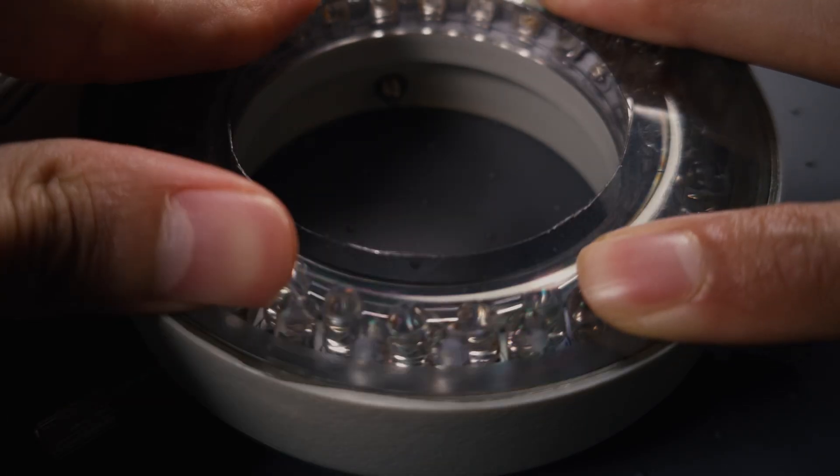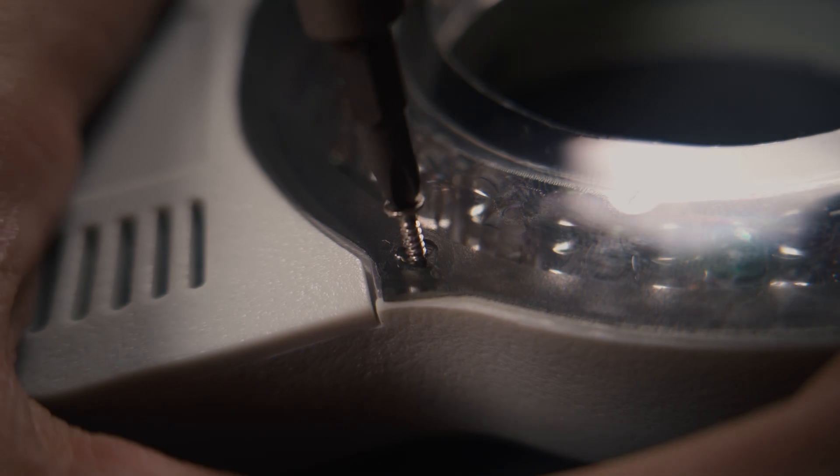Let's reassemble the lamp. We'll need to poke through the polarizer film to put the screws back in.